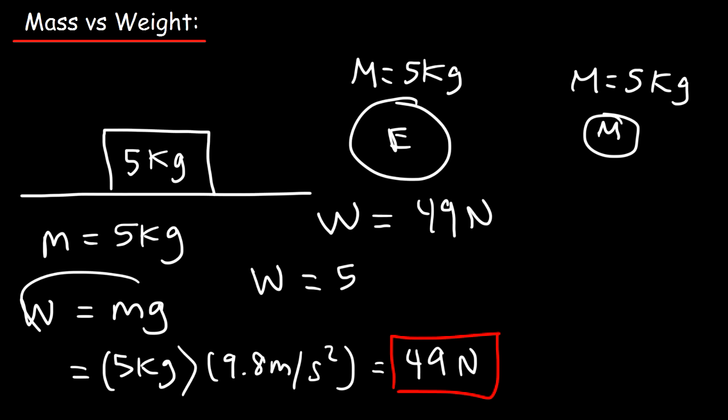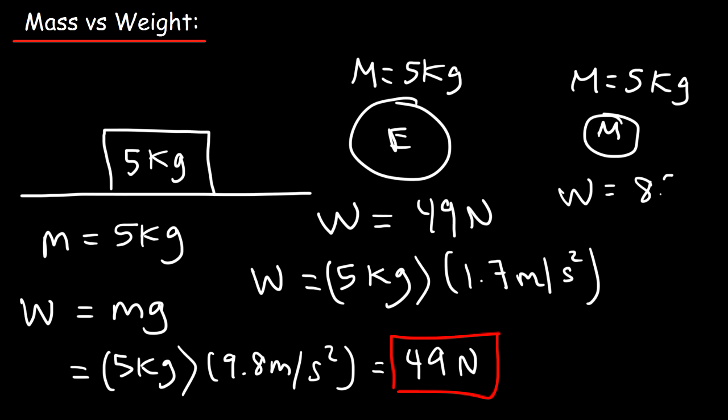You need to use this equation. But g is different. So the mass is still 5, but the gravitational acceleration on the Moon is about 1.7 meters per second squared. So the weight on the Moon is 8.5 newtons.